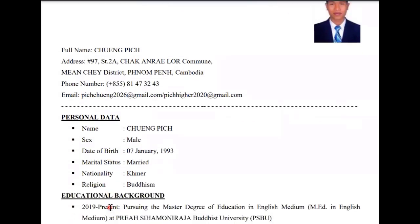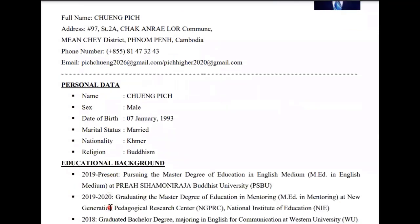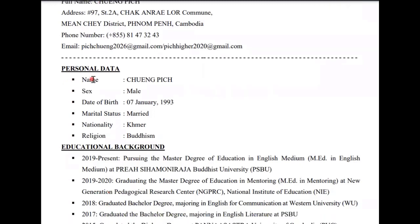You can add more or just list the two main points — it's up to you. In the personal data section, you include your name, sex, date of birth, marital status, nationality, and religion.